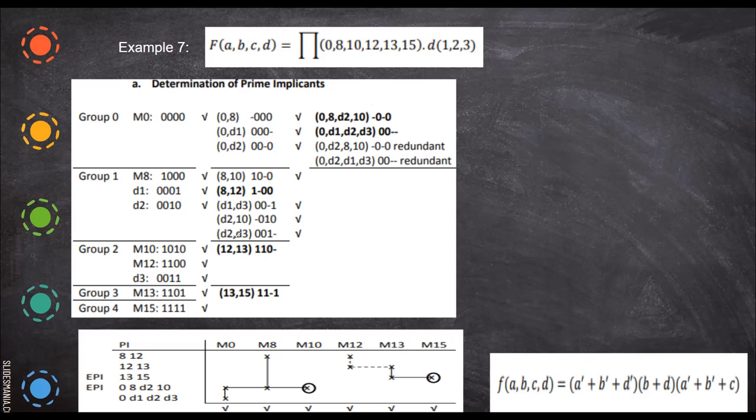And here, this is one more term which is unchecked. Because since it is not included, the 13 is taken care here, but 12 is not at all taken care. Even here also, it is not taken care. So we have to include this term in our final output. So you can write this combination, A bar plus B bar plus C. So this is our final answer. Thank you.